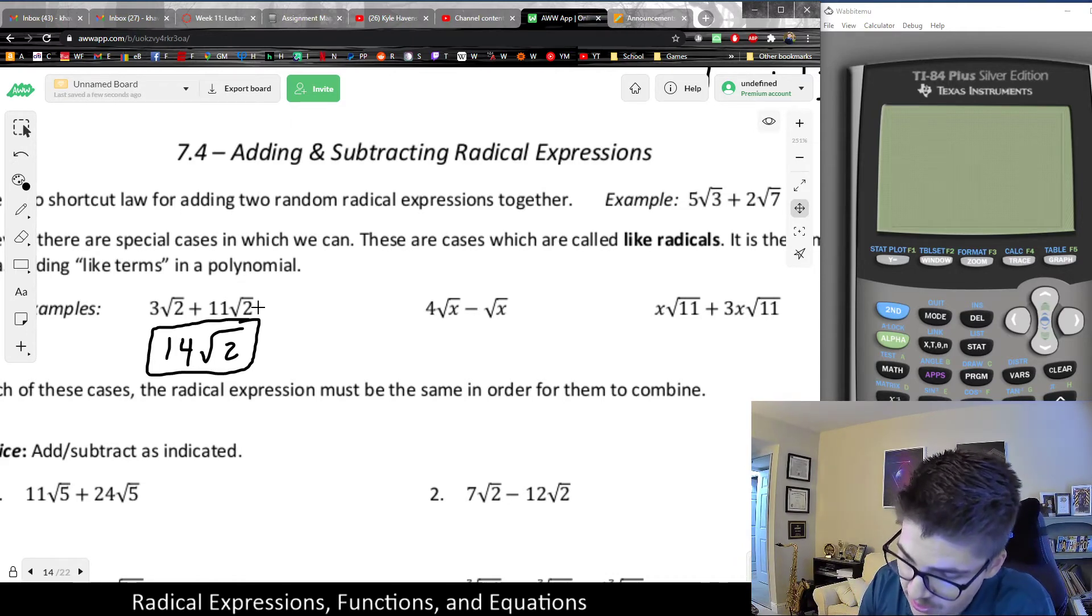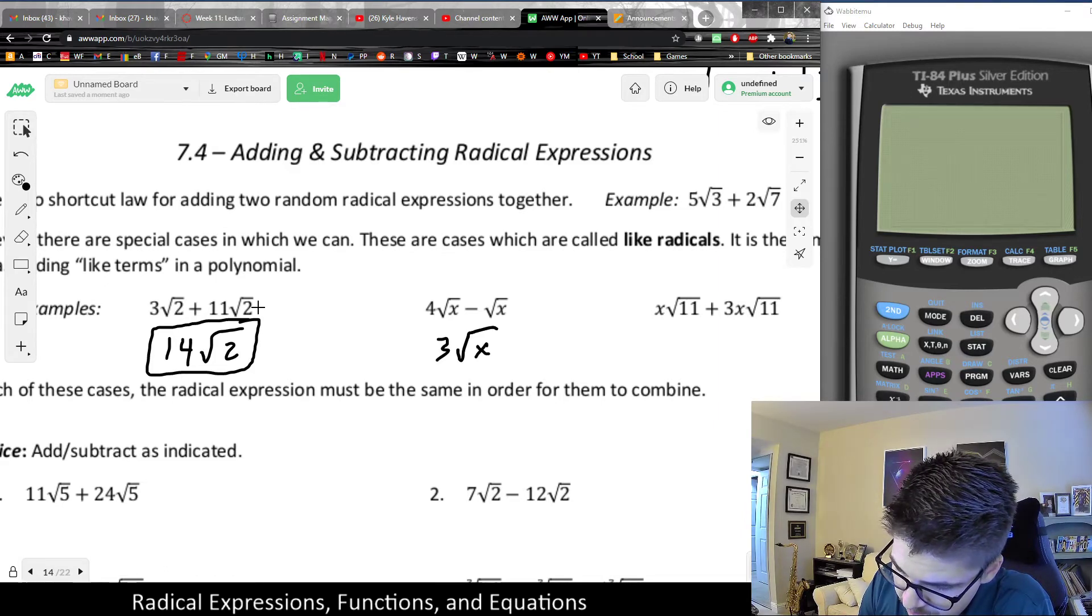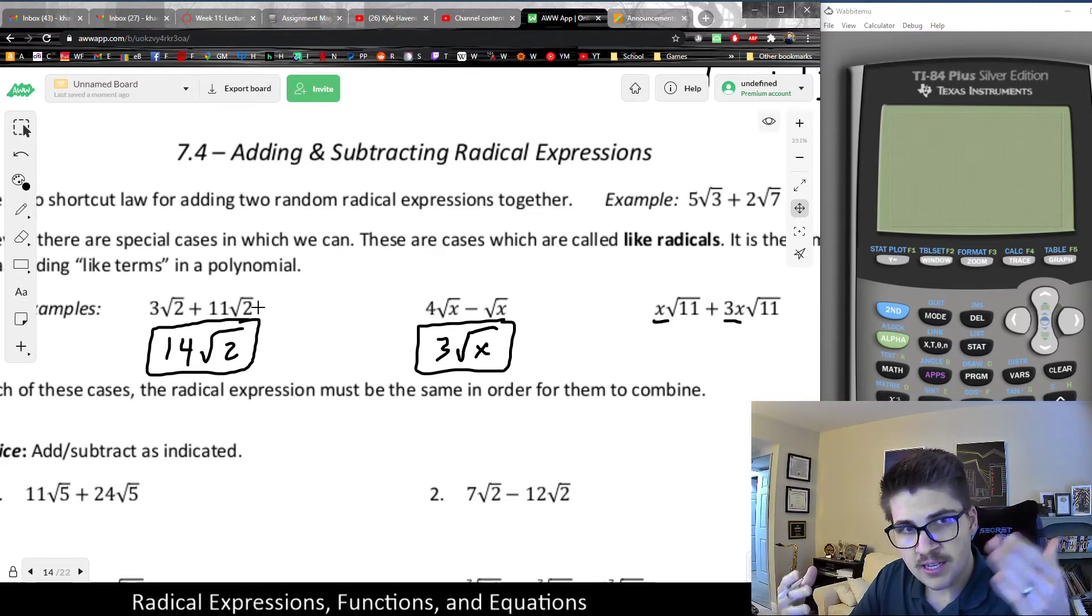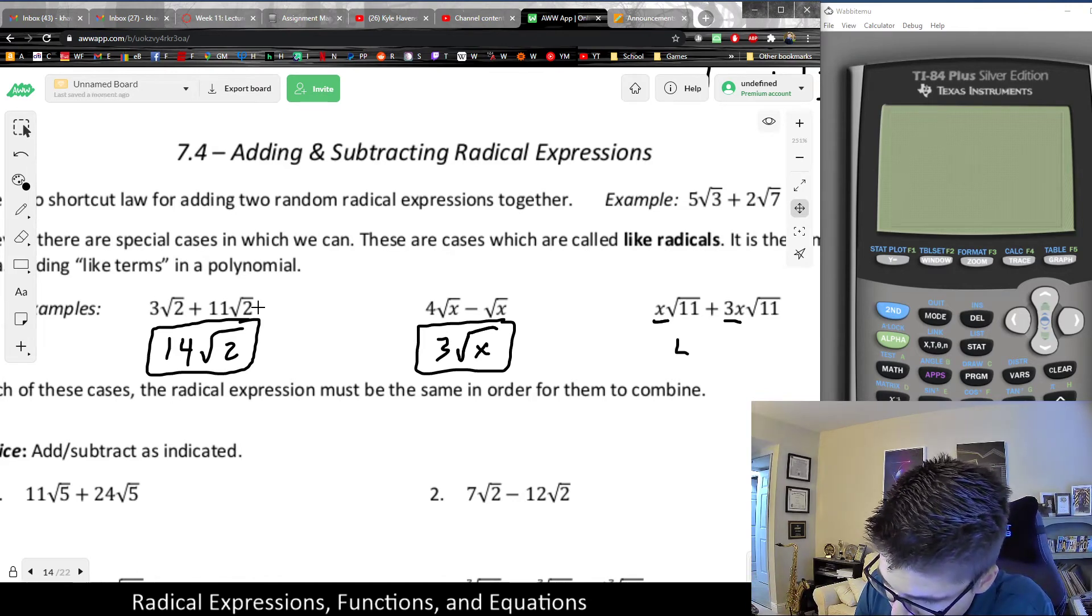Or say I had 4 root x minus root x. That would just be equal to 3 root x. Or I had x rad 11 plus 3x rad 11 because I could think about the coefficient. I could think about it as a coefficient in combining those together. Like with the distributive property, that would all multiply into a singular rad 11. And really x plus 3x is 4x. So this would just make 4x root 11.